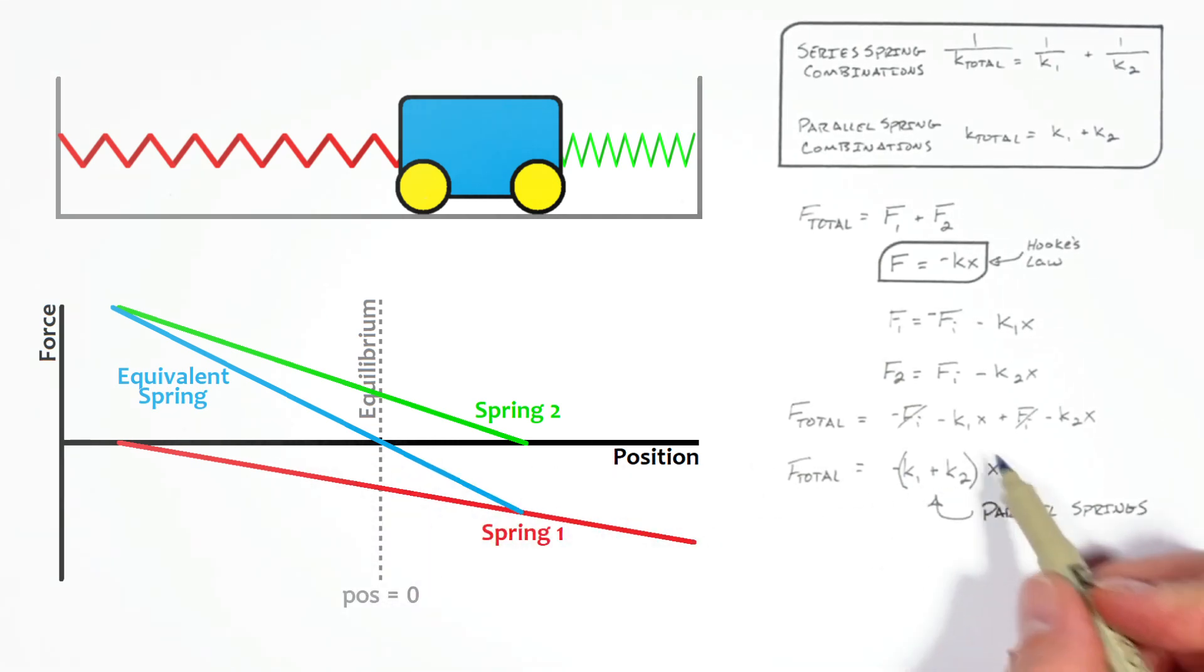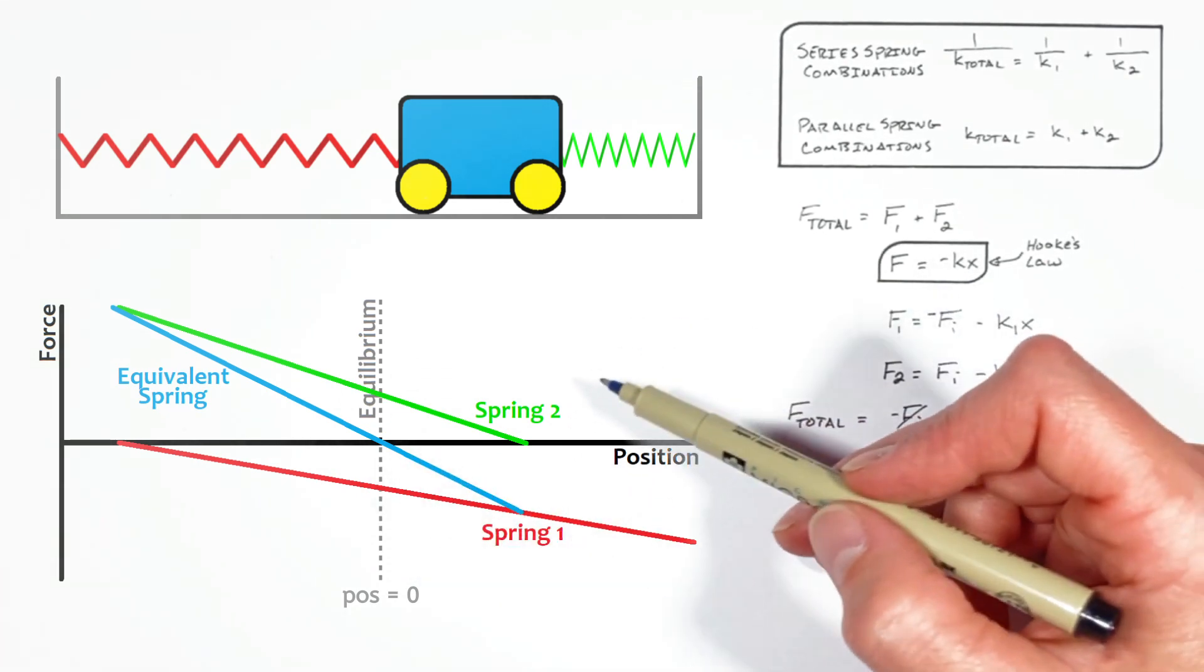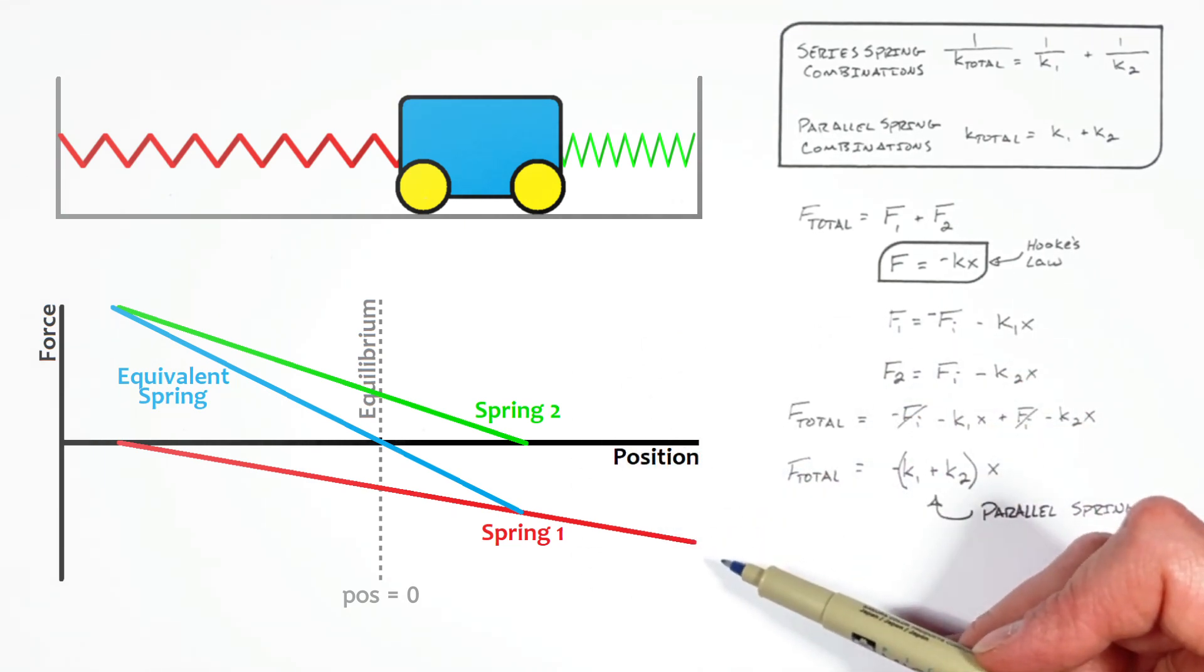Or if we go back to our graph, if we were to graph this function, we'd see a line that has a value of zero when at equilibrium, and has a slope that is the sum of the two slopes, which we see from the other springs.